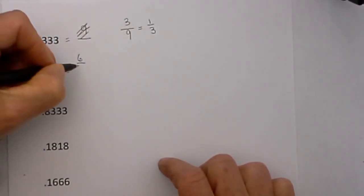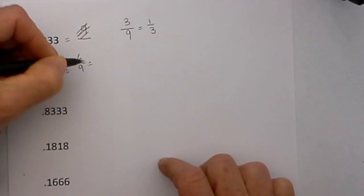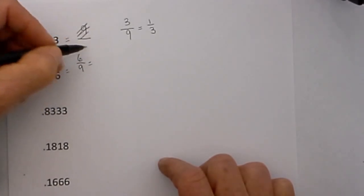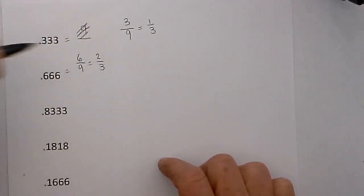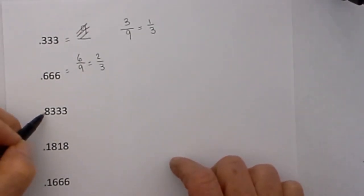You have one repeating number that is a 9 and you can reduce 6 ninths to 2 thirds.